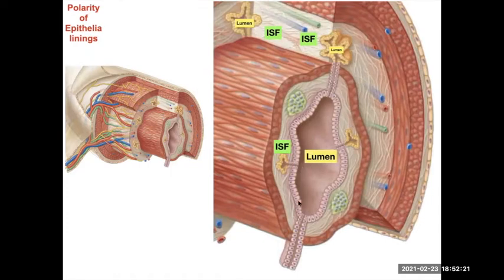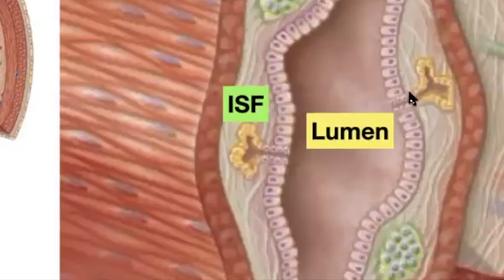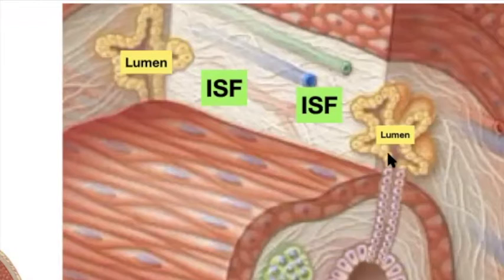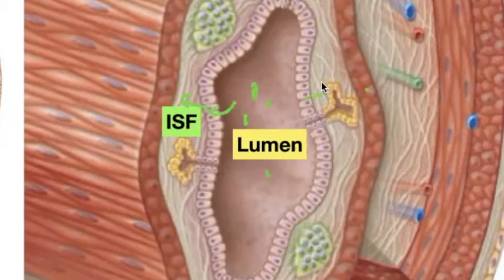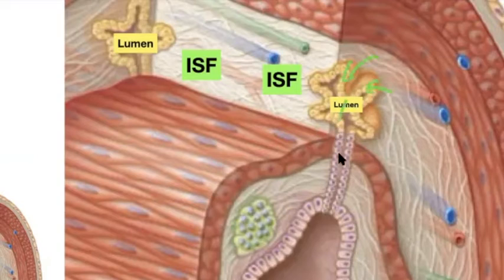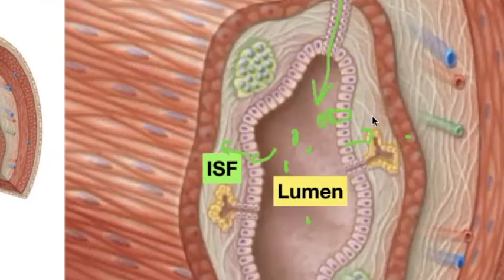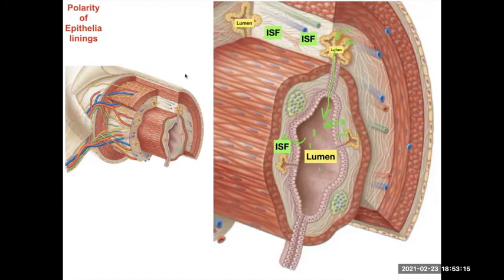The lining of the stomach or small intestine consists of epithelial cells facing a lumen containing digestive particles. Glands in the wall may also be secreting substances. Cells can take up materials from the lumen and bring them into the interstitial fluid and blood vessels, or glands can bring in materials from the interstitial fluid and secrete them into the lumen. Each side of the cell is different — the membrane transport proteins are distributed differently on the luminal versus the interstitial side.